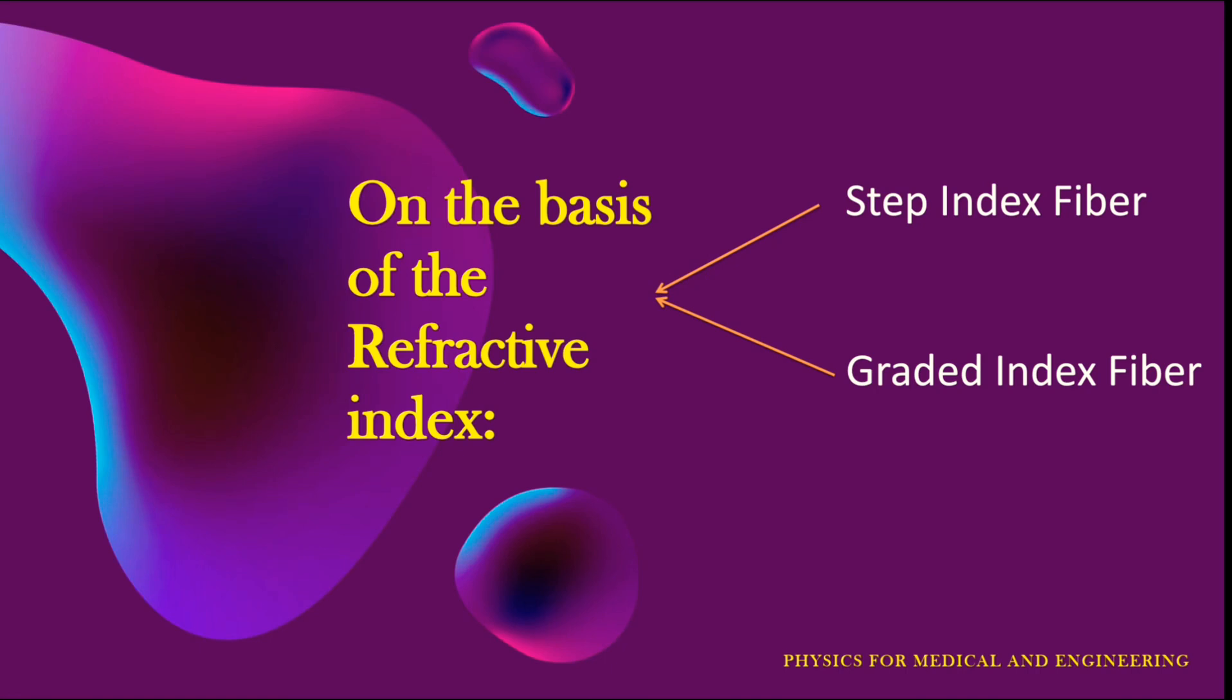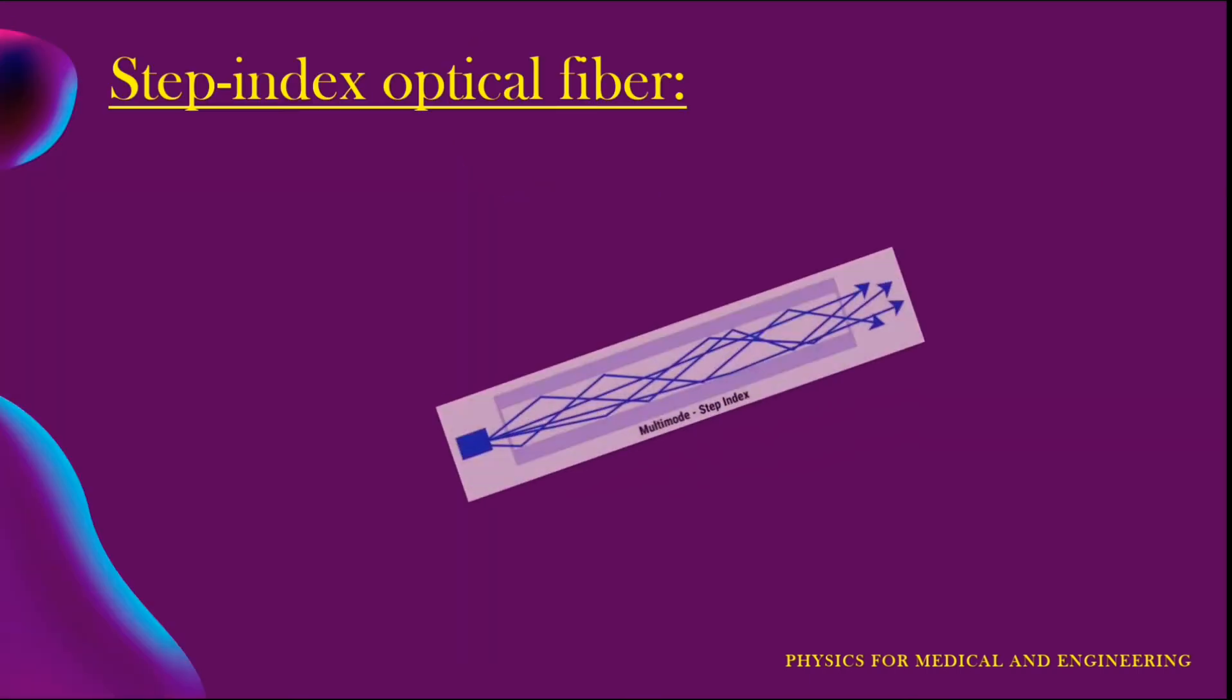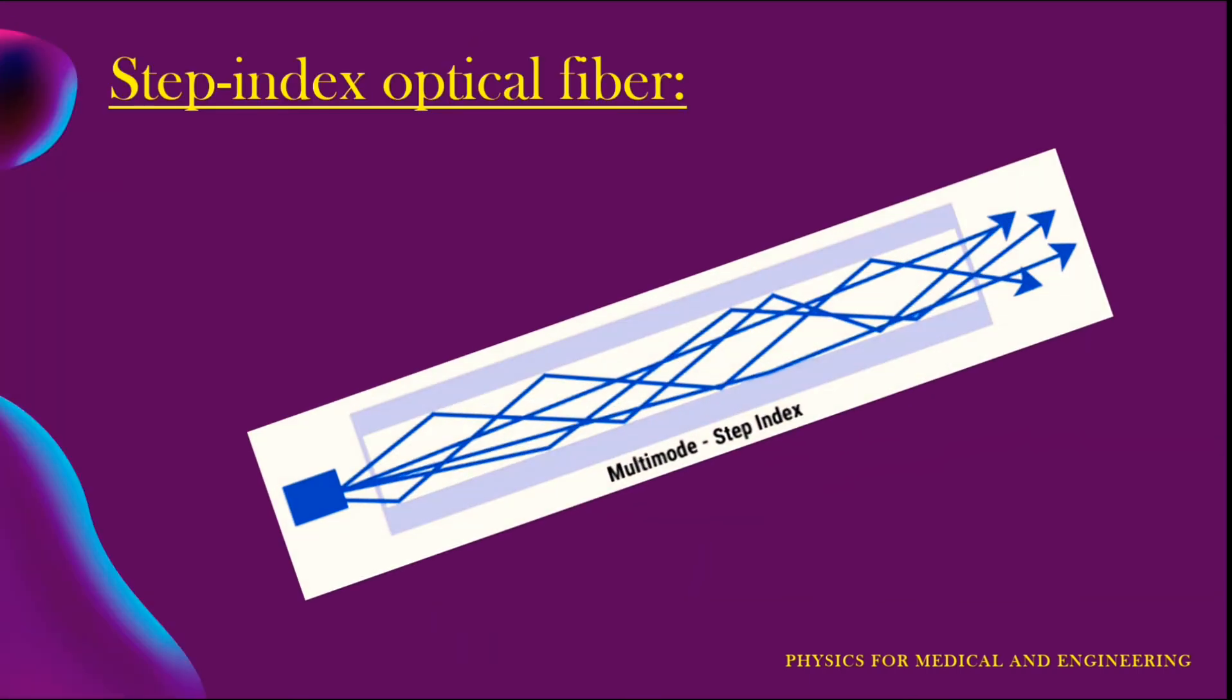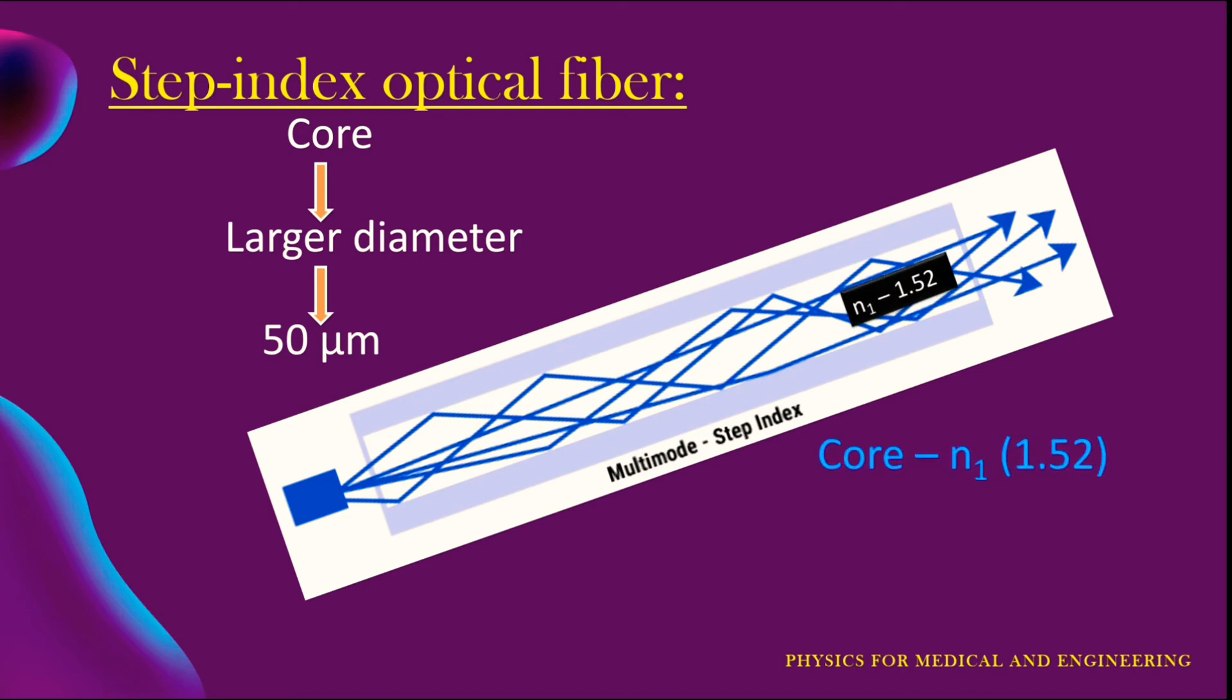Now first, step index fiber. This type of fiber has a core of relatively larger diameter such as 50 micrometer. It is mostly used for carrying white light but due to dispersion effect it is useful for short distance only. The fiber core has a constant refractive index n1 such as 1.52 from its center to the boundary with the cladding.